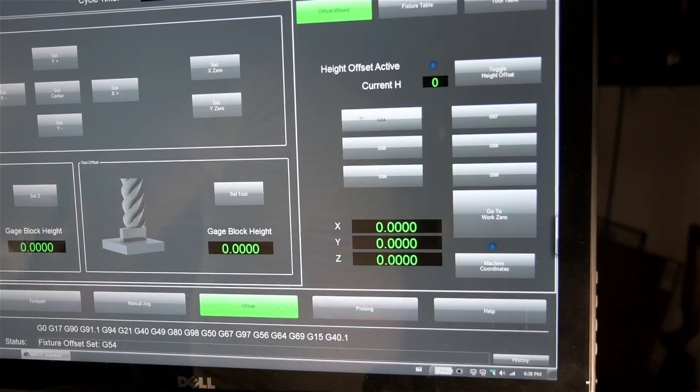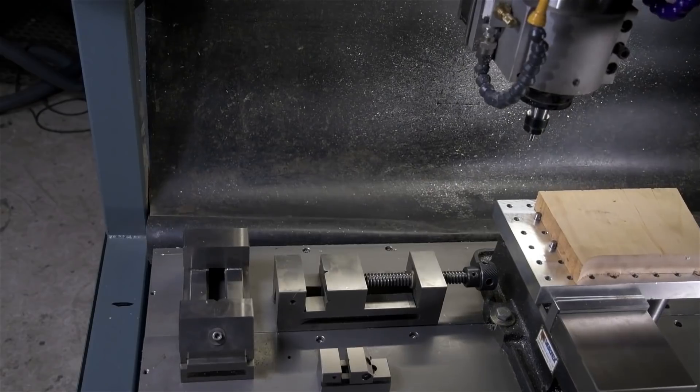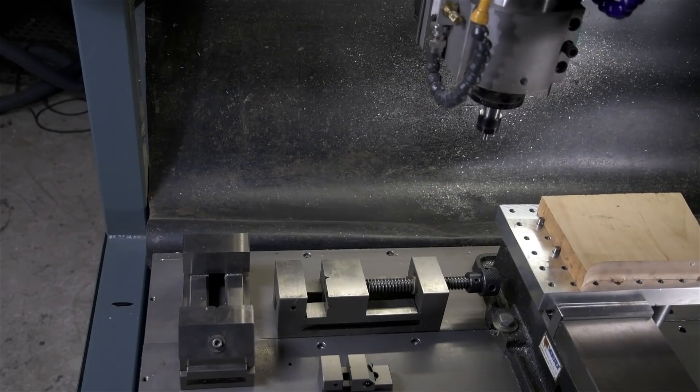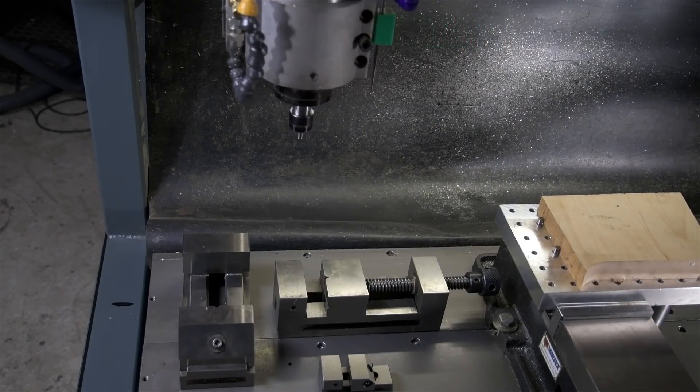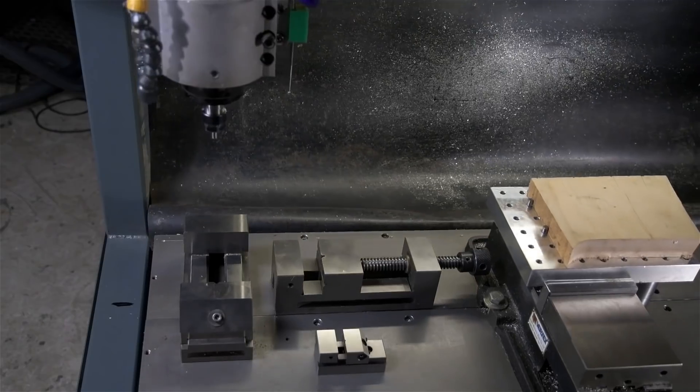If I select G54 and hit 'go to work zero,' it'll go back to the big vice with the wood on it in this case. If I select G55 and then press 'go to work zero,' it'll go to the G55 origin. Same of course for G56 and G57.